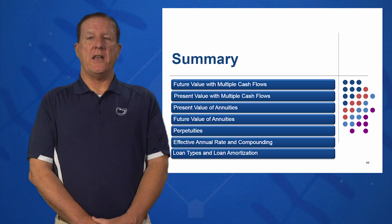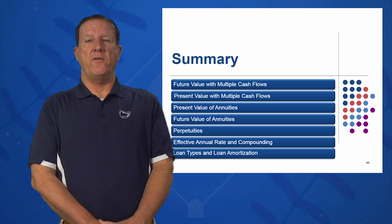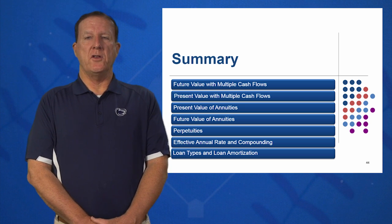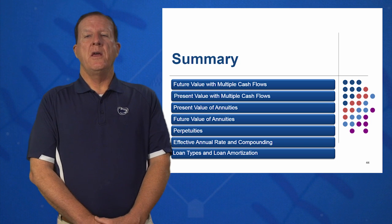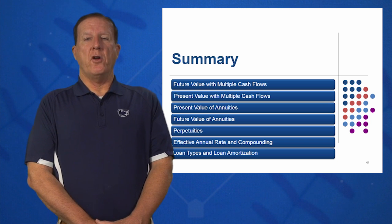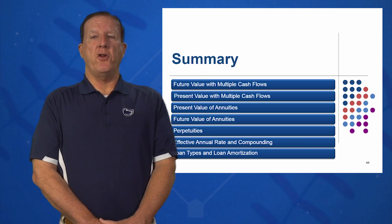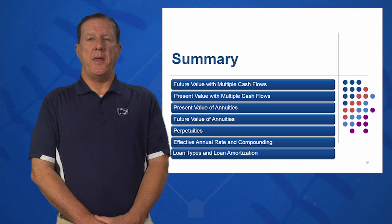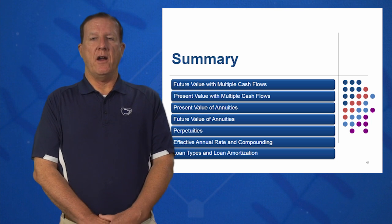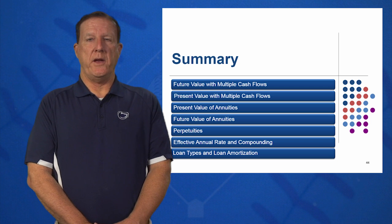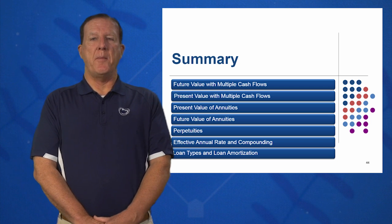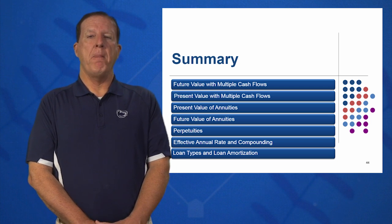The third learning objective: you should now know how to calculate the present value of an annuity, useful for mortgages, car loans, student loans, and so on. The fourth learning objective is the future value of an annuity — who wants to be a millionaire? How much must I invest each and every year to reach my financial goals? We can use the future value annuity equation if it's the same amount each month or each year.